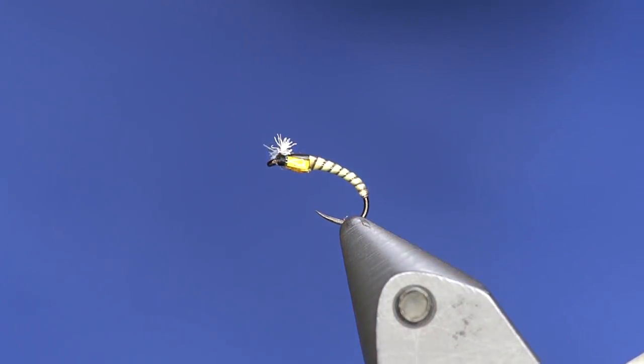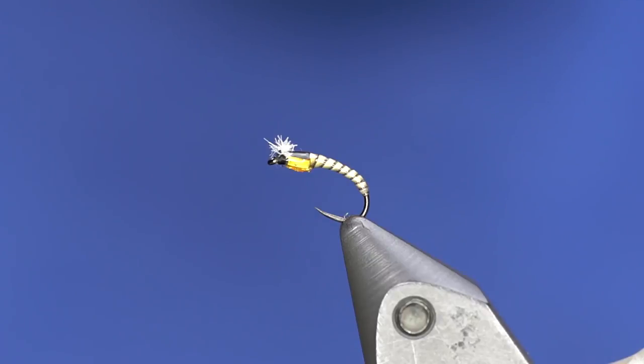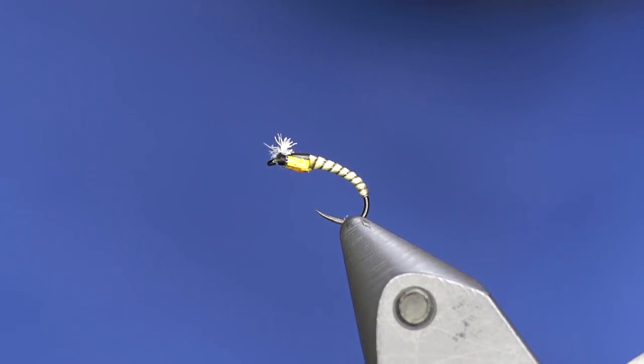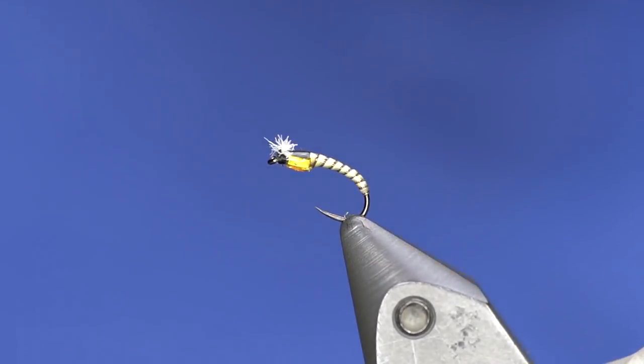And so you'll just fish this one however you fish, whether it's an indicator or midge tip or floating line, sinking line, whatever you've got going on there. But this will be a good kind of techie imitative pattern for you.